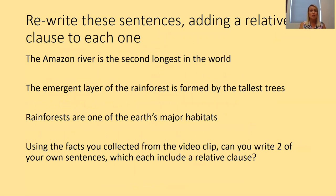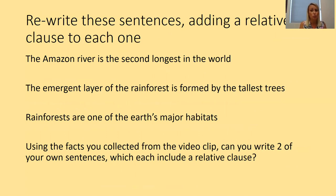Your task is to rewrite three sentences and add a relative clause to each one. Please use the facts you've gathered or other facts you may already know about the Amazon rainforest in order to modify chosen nouns within the sentences. Once you've done that, write two of your own sentences which both include a relative clause. Please pause the video and have a go at that task. We'll come back in a moment and review some possible ideas for relative clauses that could have been added, and you can reflect on that by looking at your own writing.